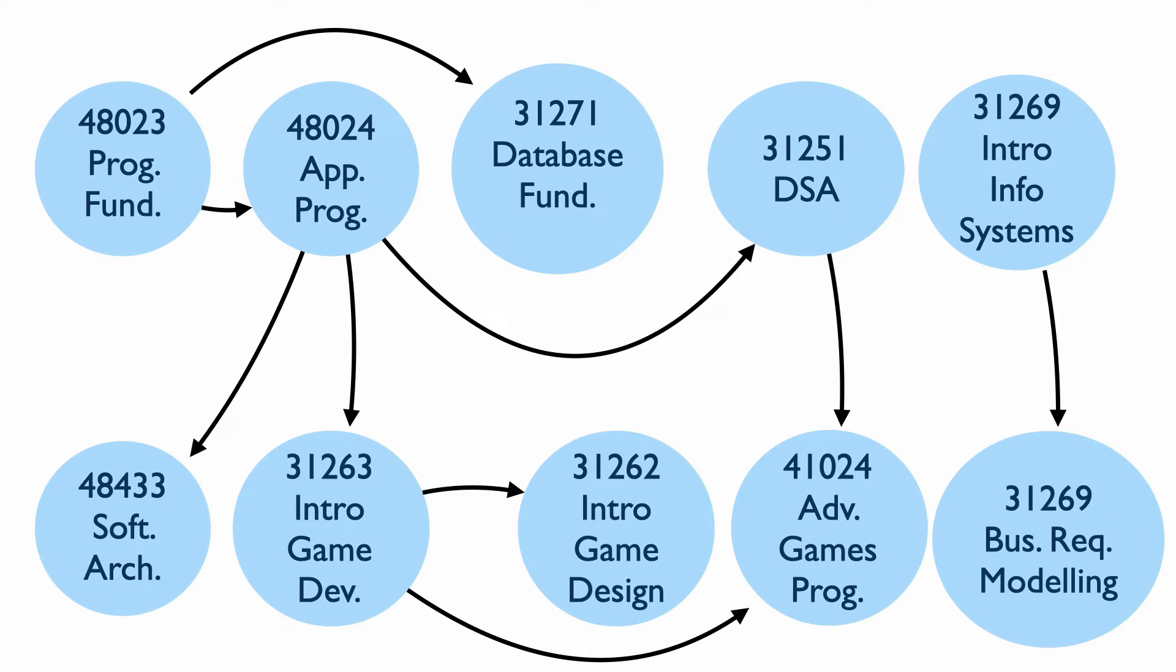In particular, there's a lot of freedom in the placement of Introduction to Information Systems, course number 31269, which I have placed on the far right of the top row. So you can actually place this course anywhere as long as it goes before business requirements modeling in the bottom row at the far right.